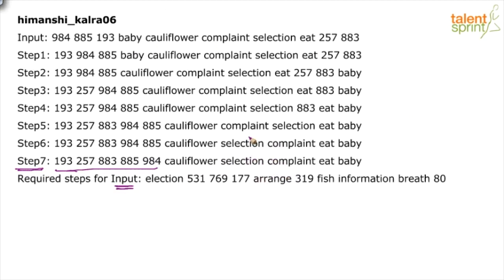The words have been arranged in descending order of the number of vowels. For example, look at cauliflower — how many vowels does it have? A, U, I, O, E. Here's a fun fact: cauliflower is one of those words that contains all five vowels. It's a great word to find. The word with all five vowels is cauliflower.